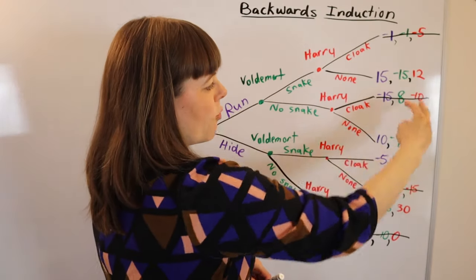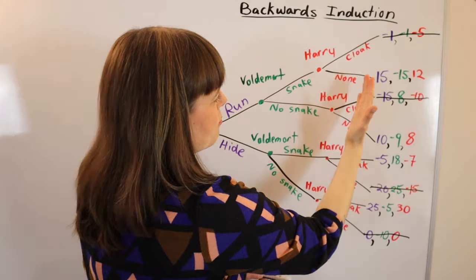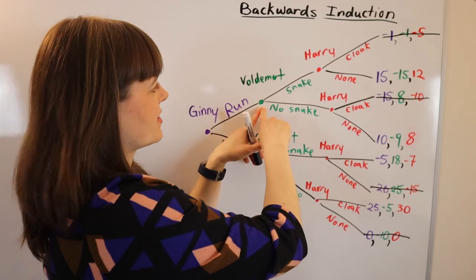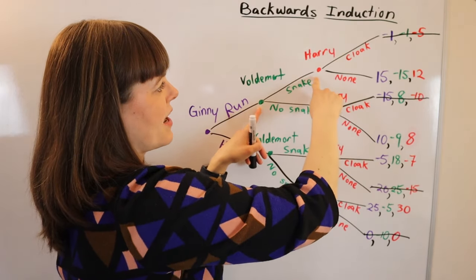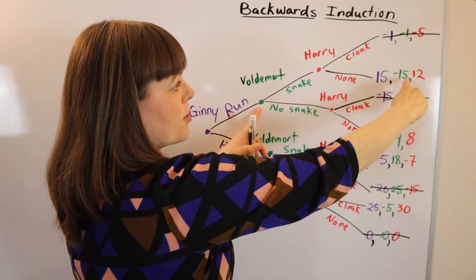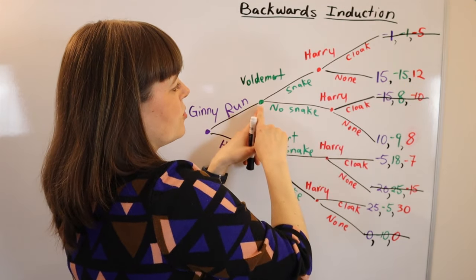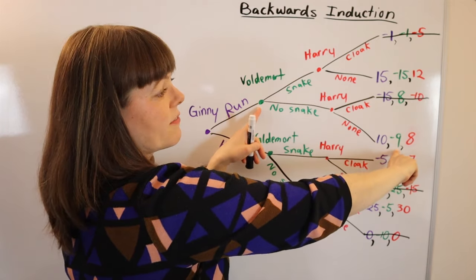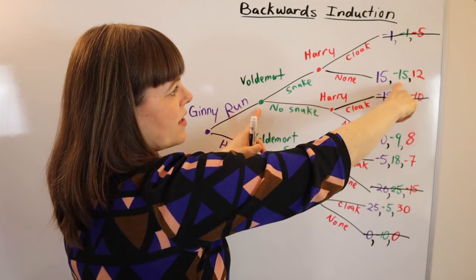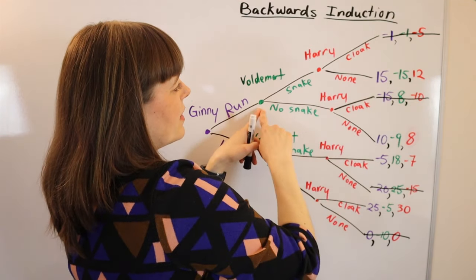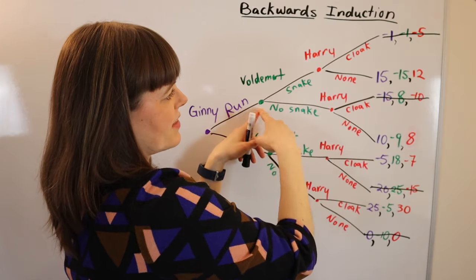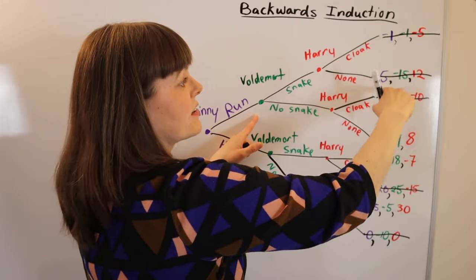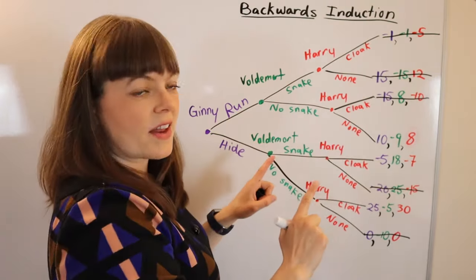Now we have four end nodes left and move one step backwards to Voldemort's decision. If Voldemort brings his snake, his payoff is negative 15; if he doesn't bring his snake, his payoff is negative 9. He prefers negative 9, so he will choose not to bring his snake at this node, meaning the snake branch will never be reached regardless of how much Jenny likes that payoff of 15.